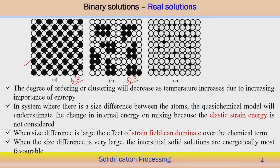When the size difference is large, the effect of the strain field will dominate rather than the bond energy between the atoms — over the chemical term, that means bond energy. When the size difference is too much, then an interstitial solid solution will form, and that is energetically more favorable if the size difference between the two atoms is too high. These are the typical factors we need to consider when analyzing the real solution, though I am not going into the calculation of estimating the Gibbs free energy, because it becomes more complicated if we consider all these factors.